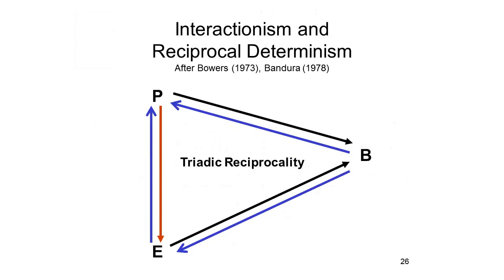Here we see a schematic depiction of the full scope of interactionism and reciprocal determinism. The causal relations between the person and his or her behavior, the environment and the behavior that takes place within it, and the person in the environment in which his or her behavior takes place — all these elements are involved in bi-directional causality. In other words, each element in Lewin's formula — not just the person and the environment, but behavior as well — each of these elements serves as both cause and effect of each of the others.